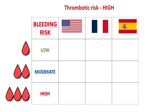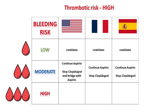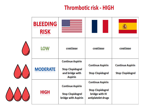In high thrombotic risk patients, consideration should be made to postpone surgery. In low bleeding risk, Americans, French, and Spanish all suggest continuing aspirin, clopidogrel, or dual antiplatelet. In moderate bleeding risk, Americans suggest continuing aspirin, stopping clopidogrel, and considering bridging with aspirin. The French suggest continuing aspirin and, if on dual antiplatelet, stopping clopidogrel and continuing aspirin. The Spanish say to stop clopidogrel but continue aspirin. In high bleeding risk, Americans say continue aspirin, stop clopidogrel, and consider bridging. The French suggest stopping clopidogrel or aspirin and considering bridging with intravenous antiplatelets. The Spanish suggest continuing aspirin, stopping clopidogrel, and considering bridging.